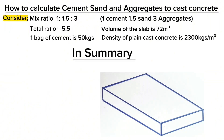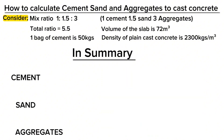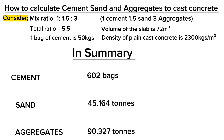In summary, for a slab of 30 meters along the length, 12 meters along the width and 200 millimeters slab depth with mix ratio 1 to 1.5 to 3, you need to purchase 602 bags of cement, 45.164 tons of sand and 90.327 tons of aggregates. The above calculation covers the exact figures — you will need to add 5 to 10% allowance for wastage.